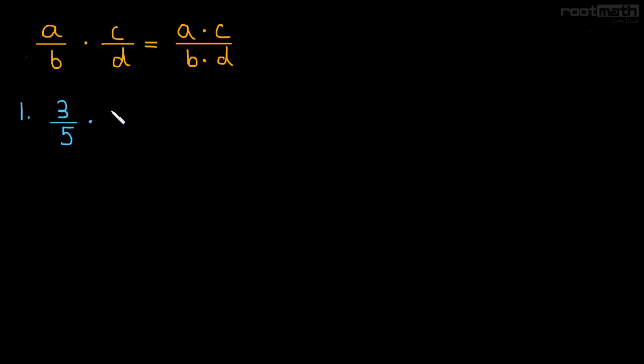3 over 5 times 2 over 7. Well, we just get 3 times 2 in the numerator over 5 times 7 in the denominator. So it's just 6 over 35.